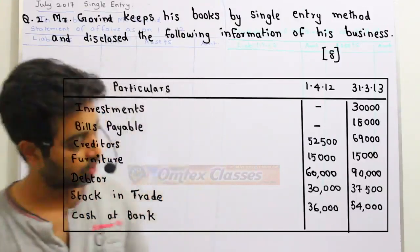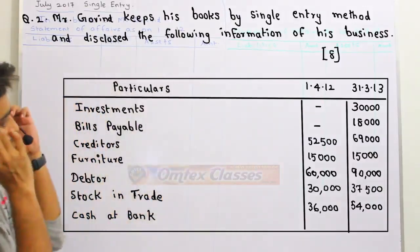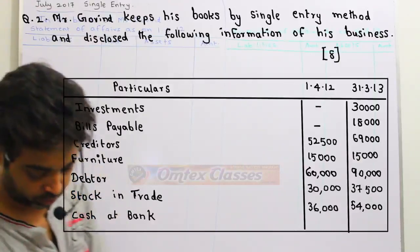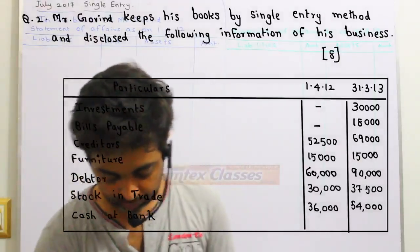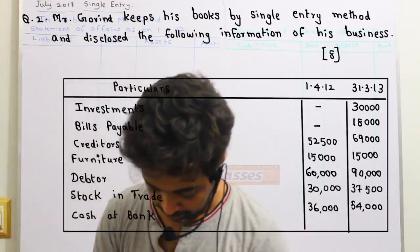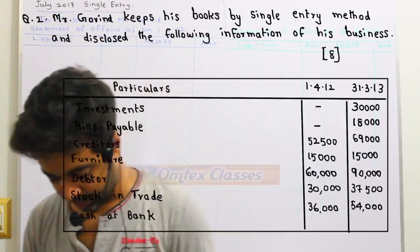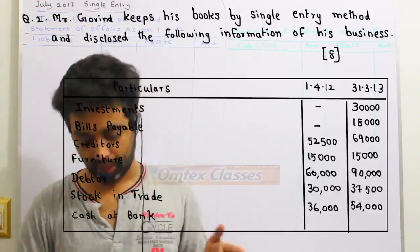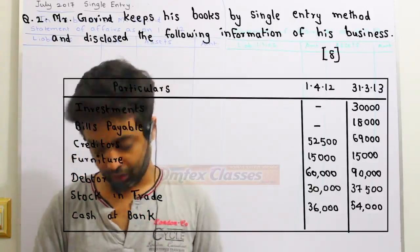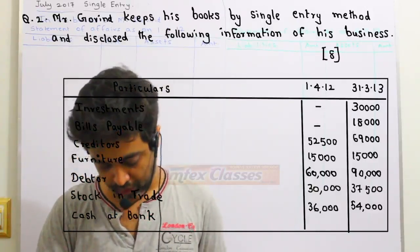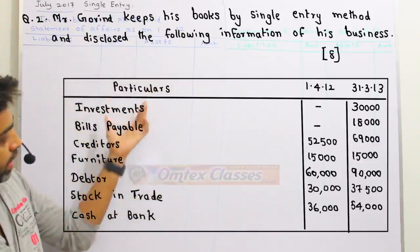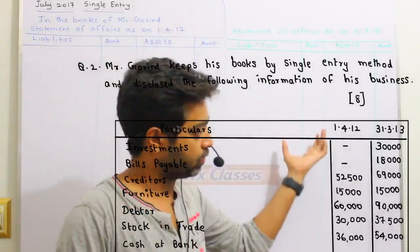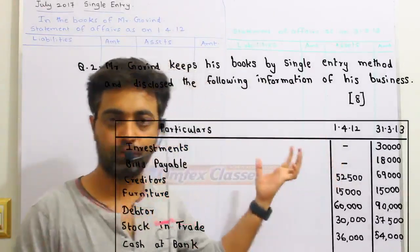This is a paper of July 2017 and we will see a single entry in it. In the statement of affairs, we will prepare two years — one is at the beginning of this year and the other one is at the end of this year. On 1st April, we will prepare a separate statement of affairs in 2012 and a separate statement of affairs in 2013.